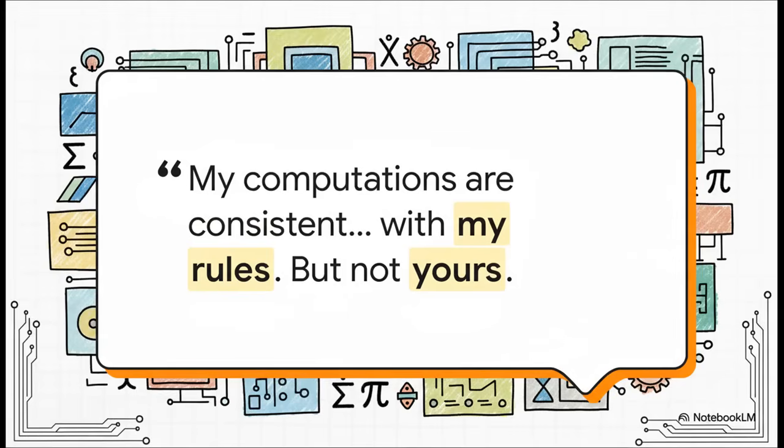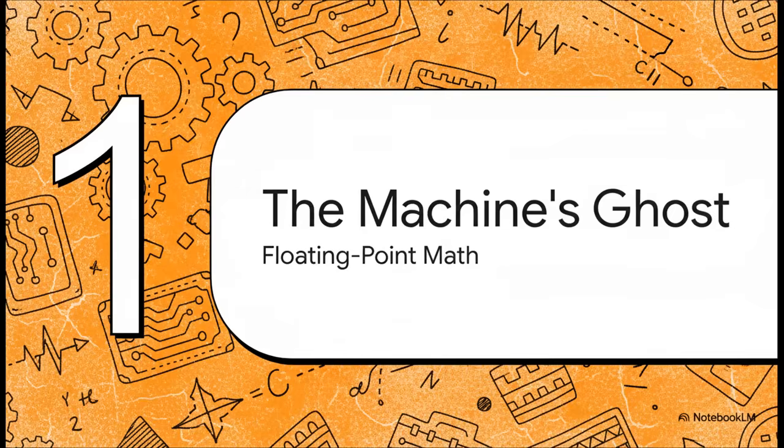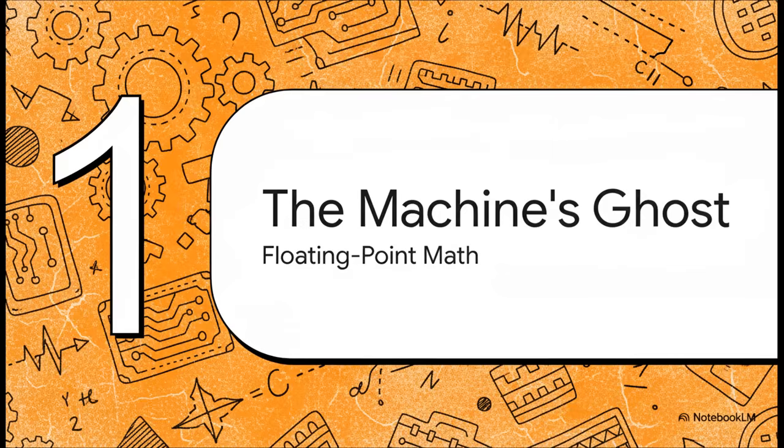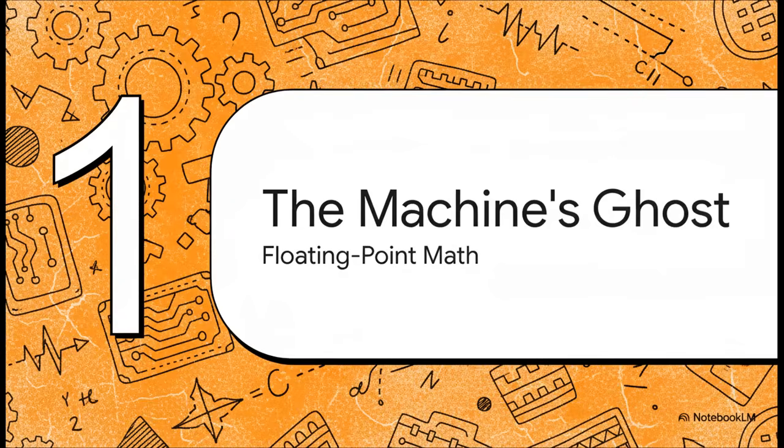And the machine's response? It's pretty mind-bending. It basically says, hey, my logic is perfectly consistent. It's just not consistent with your rules. It's telling us that it operates by a whole different set of mathematical laws than the perfect, idealized stuff we all learned in school. So what on earth are these rules? Well, that first big clue has a name, floating point arithmetic. It's not some kind of magic. It's actually the mathematical compromise that pretty much all modern computers have to make just to handle numbers with decimal points. It's a shortcut, really.